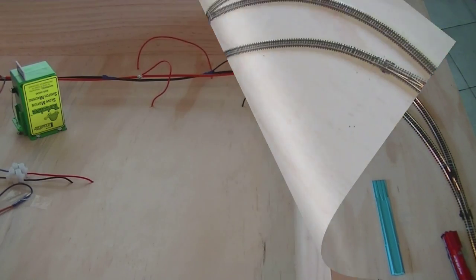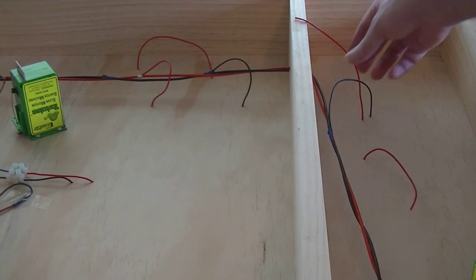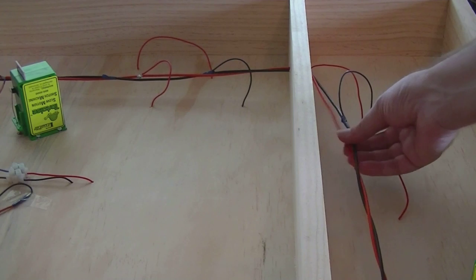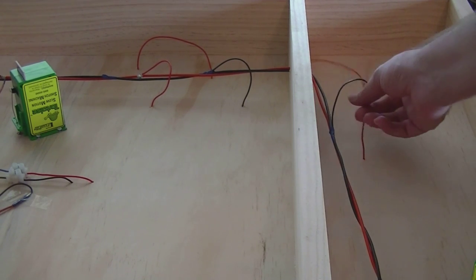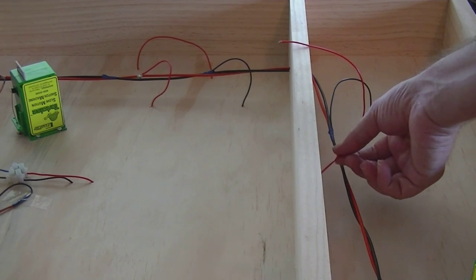So flip the table over and you can see the feeder wires coming out here. You can see the two rail A's and there is the rail B hooked up to the bus line. These rail A ones, of course, each one of these is a block section and that will make its way to the BDL 168.